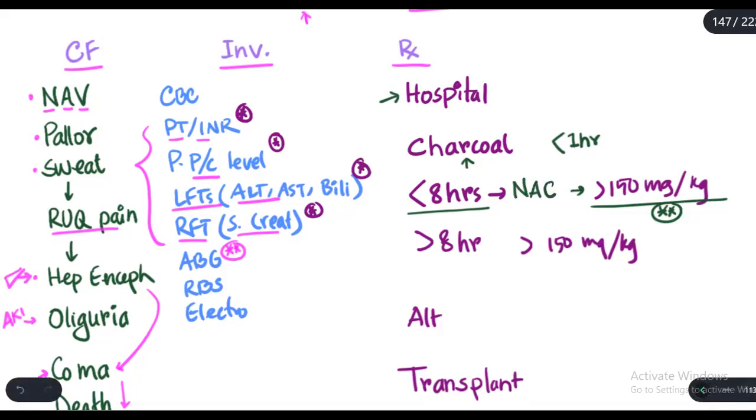Or if the patient has taken more than 150 milligrams per kg of paracetamol, we give him or her acetylcysteine right away before seeing the paracetamol level. But after we have the paracetamol level, we will plot it in the nomogram and check if the paracetamol level is below the nomogram. And if it's below the nomogram and liver function tests are normal, we can discontinue the acetylcysteine.